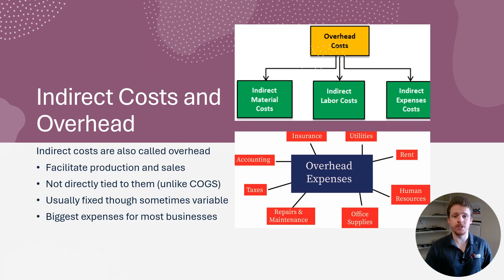Indirect costs are called overhead. They're the expenses a business incurs just to stay open, regardless of sales. Because they aren't tied directly to sales, overhead expenses are often fixed. Think of the money that a business pays every month to lease a commercial space — that same amount of rent will be due even if the business isn't making sales at all. Since overhead includes large sums for things like rent and utilities, as well as most labor costs for employees, it tends to be the biggest set of expenses for a business.